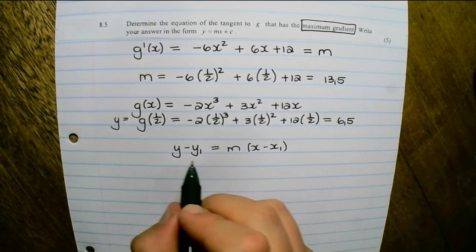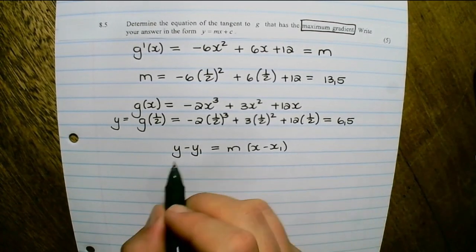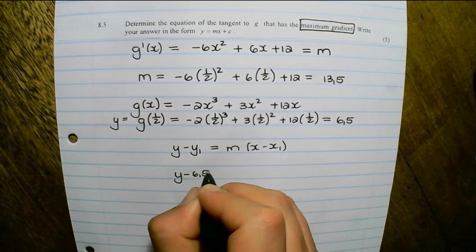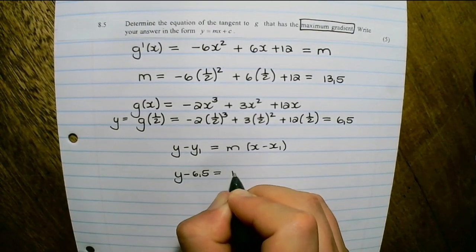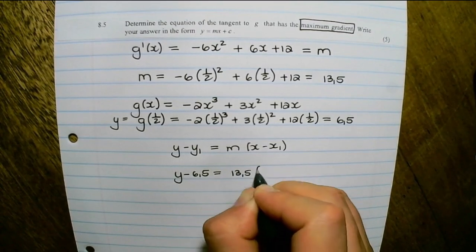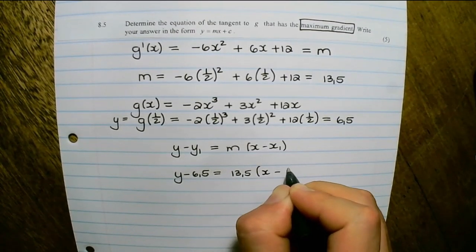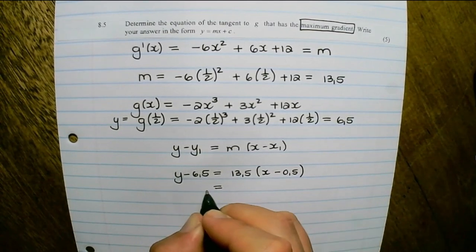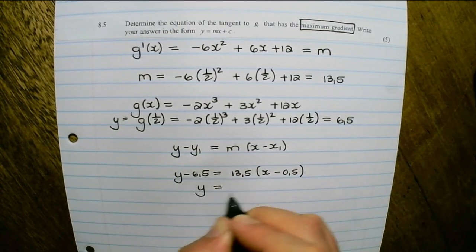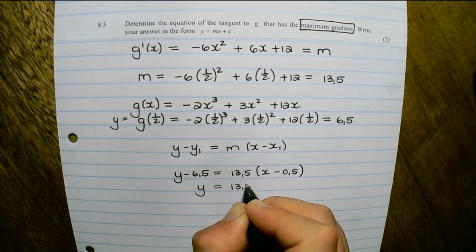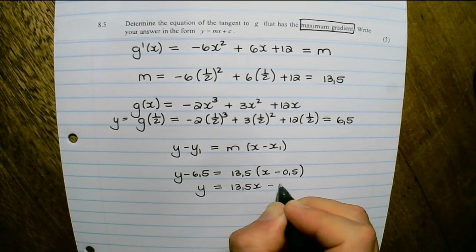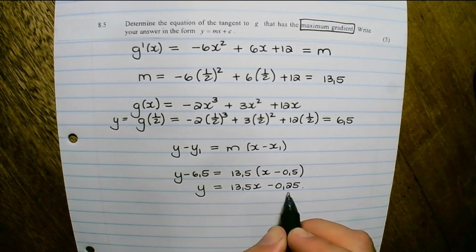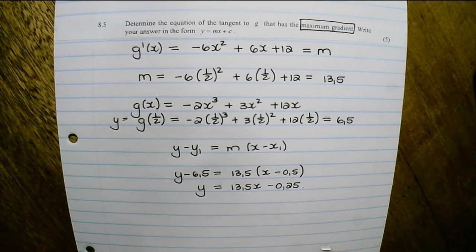And now using the equation of a straight line as found on the formula sheet, we have y minus 6 and a half equals 13 and a half times x minus one half. And if I multiply out and write in standard form, I have y equals 13 and a half x minus a quarter. And that is the equation of the tangent where the gradient is a maximum.